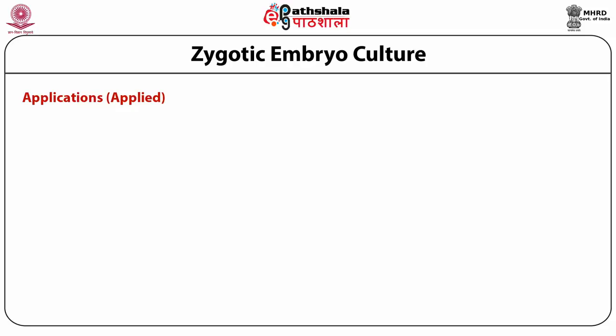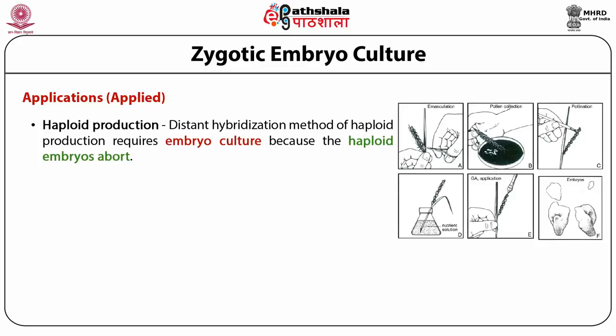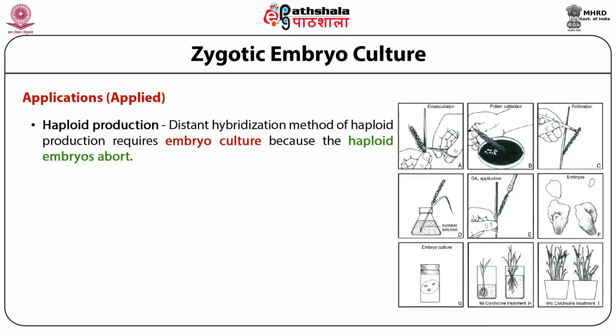Another application is haploid production. In the method of distant hybridization for in vitro haploid production, after fertilization, the chromosomes of one parent are selectively eliminated, leaving a haploid embryo. Normally this embryo aborts and cannot develop fully. Therefore, excising the embryo before abortion and culturing it on medium has helped raise full haploid plants. Thus, embryo culture aids haploid production by the technique of distant hybridization.